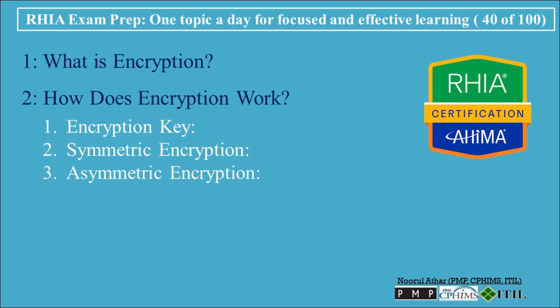In asymmetric encryption, two keys are used: a public key to encrypt the data and a private key to decrypt it. Only the person with the private key can decrypt the data, which adds an extra layer of security. Asymmetric encryption is commonly used in secure communications and digital signatures in healthcare.